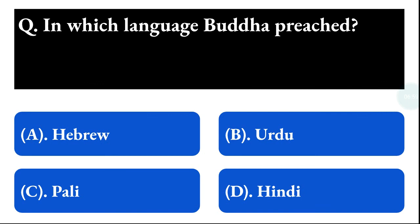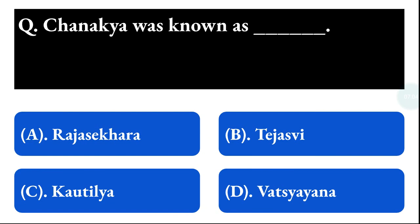Next question: Chanakya was known as — option A: Rajasthan, option B: Tejasvi, option C: Kautilya, option D: Vatsayana. The correct answer is option C, that is Kautilya.